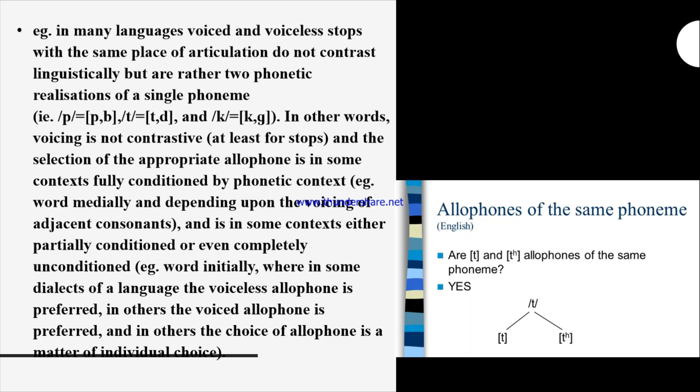As we discuss about the p and p, d and d, and g and g — these all are different pairs. In other words, voicing is not contrastive, at least for stops, and the selection of the appropriate allophone is in some contexts fully conditioned by phonetic context — word medially and depending upon the voicing of adjacent consonants — and in some contexts either partially conditioned or even completely unconditioned.